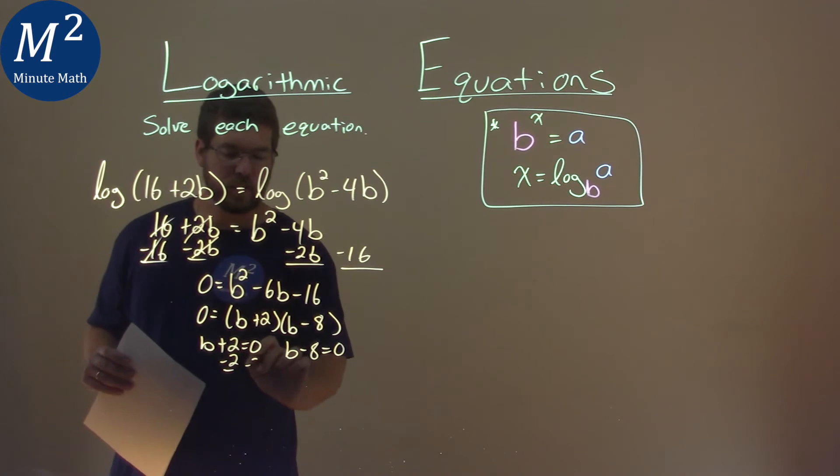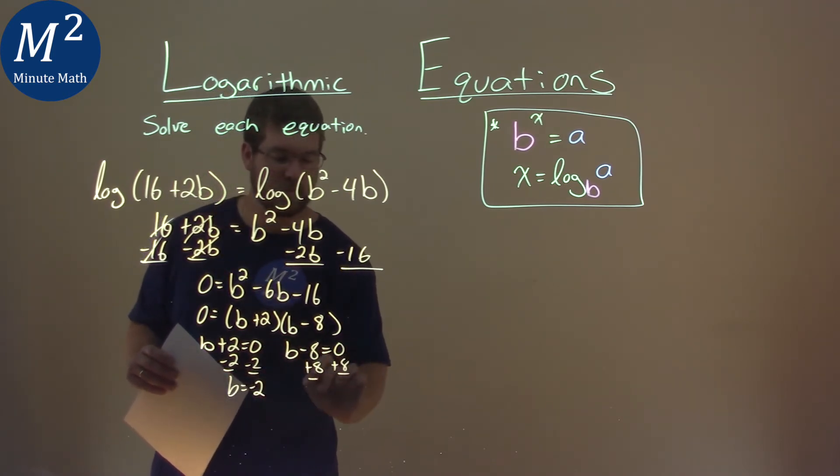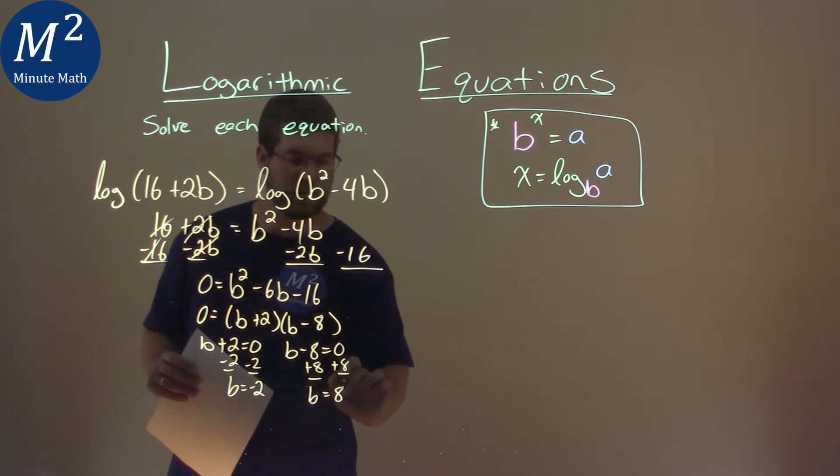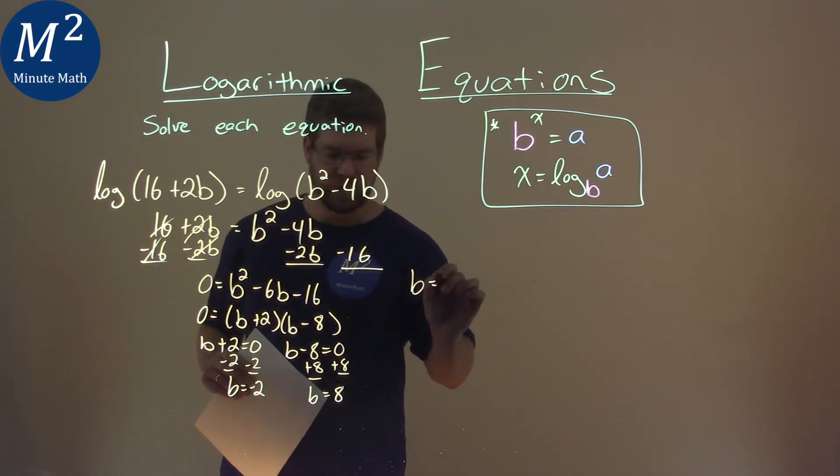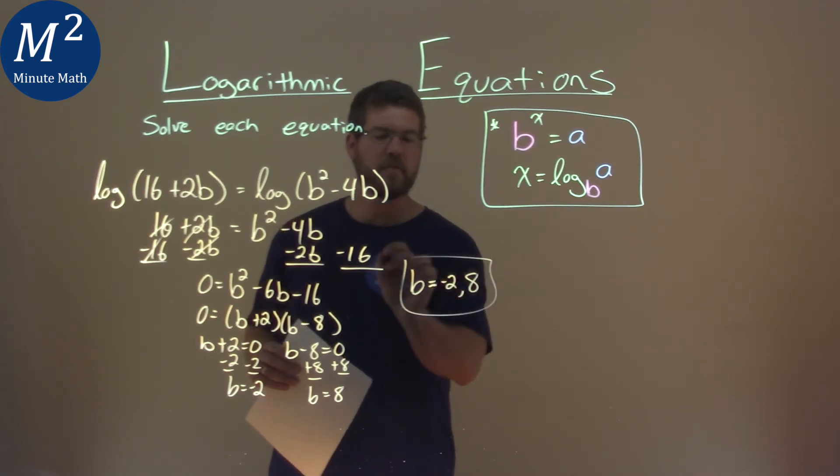Subtract the 2 to both sides, and b equals negative 2. Add 8 to both sides, and b equals positive 8. And so my final answer here is b equals negative 2 and positive 8.